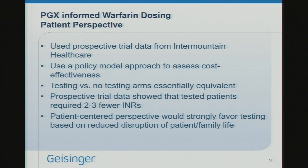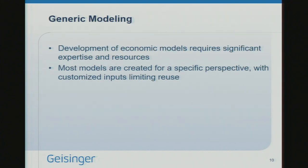However, the prospective trial data showed that tested patients — those who underwent pharmacogenomic testing — required two to three fewer INRs to get to a stable dose. From a patient-centered perspective, if you can disrupt that patient's life two to three times fewer by having them come in for INRs, that's a pretty important outcome. You're not taking them out of work or away from home, having them come to the clinic, find parking, et cetera. Essentially, the costs are the same, so why not choose something that would be less disruptive for the patient? We haven't done much from the patient perspective, but we should be doing more thinking about that.